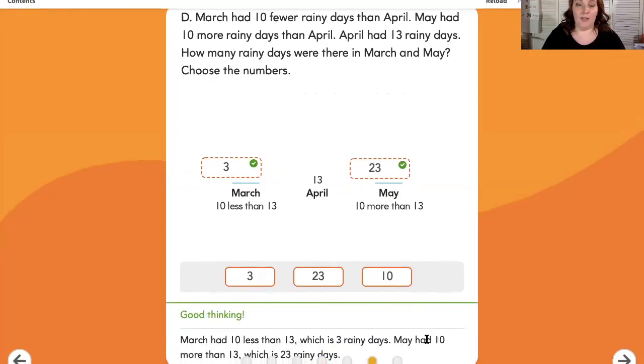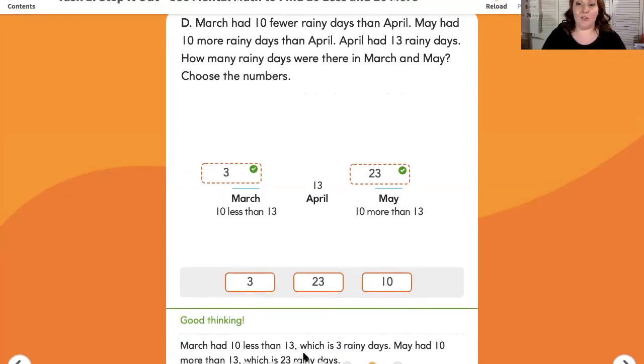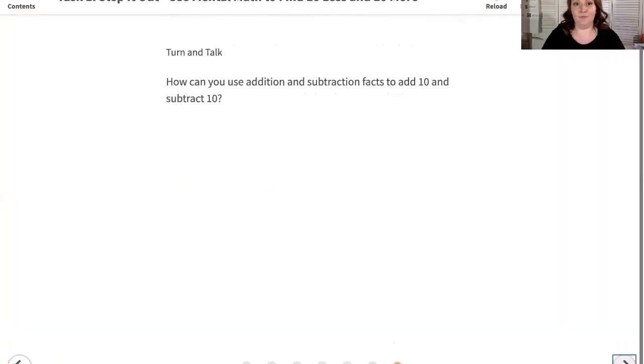We'll check our work. March had 10 less than 13, which is 3 rainy days. May had 10 more than 13, which is 23 days. How can you use addition and subtraction facts to add 10 and subtract 10?